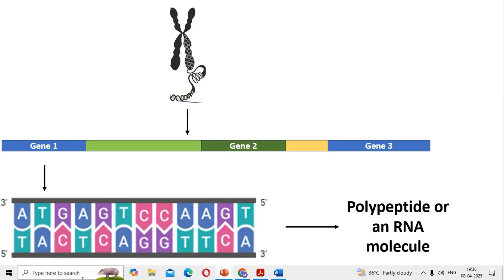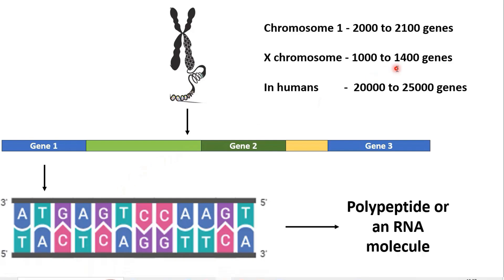For example, humans have 46 chromosomes and these 46 chromosomes are having an approximate total of 20,000 to 25,000 genes arranged on them.